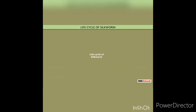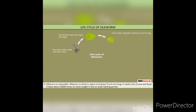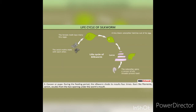Life cycle of the silkworm has 4 stages. Egg: after laying, eggs are incubated until they hatch and become worms. The silkworm is white in color and about 5-6 mm long. It needs a lot of care and food, and takes about 30,000 times its initial weight in the 6-week feeding period. During this period, the silkworm sheds its molts 4 times. A gum-like fine filament called sericin exudes from two openings under the worm's mouth, and the worm begins to spin its cocoon, which takes around 8 days.